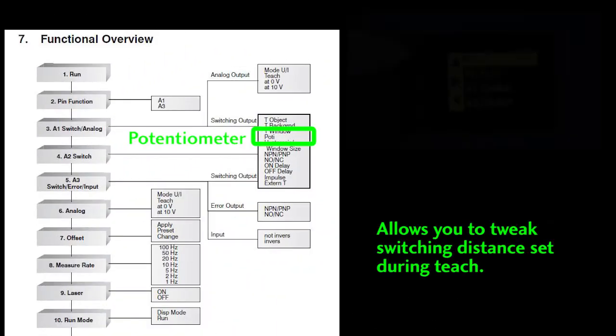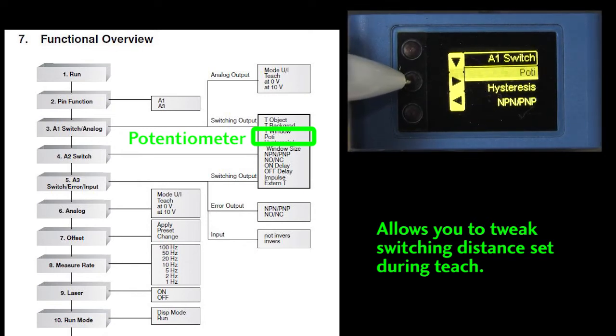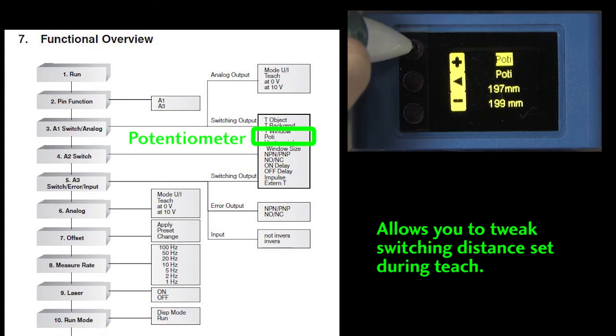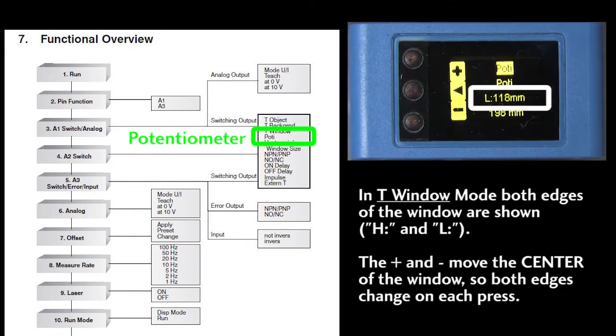This PODY command – I assume that stands for potentiometer – allows you to tweak the trigger point for all of these. For example, if your setup configured the sensor to trigger at 197mm and you need to bump that up a few millimeters, just drop into this menu and tweak it. If you have the sensor set to the teach window mode, you will see it toggle between the two window edges like this. The plus and minus signs tweak the center of the window so you will see both the high and the low change each time you press one.